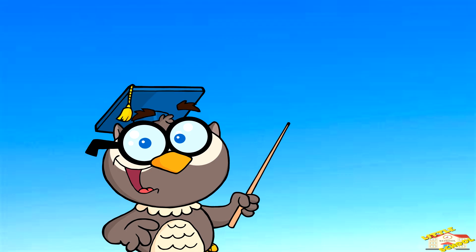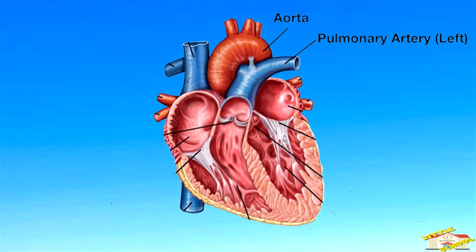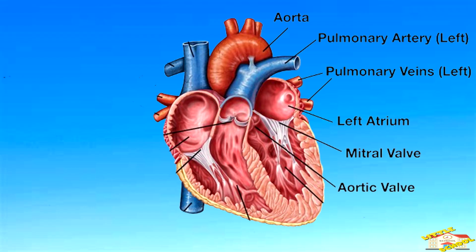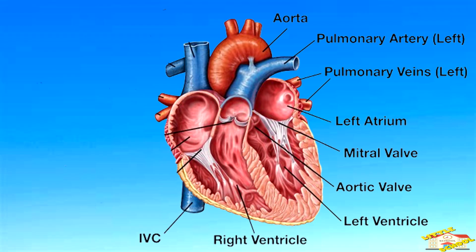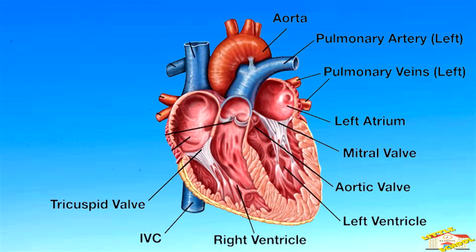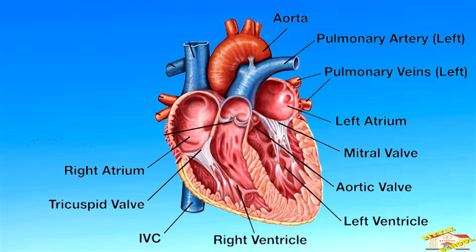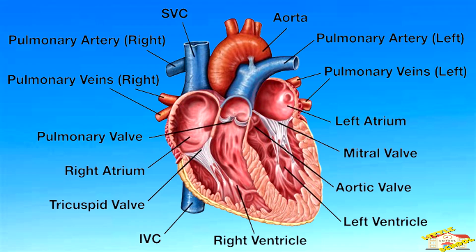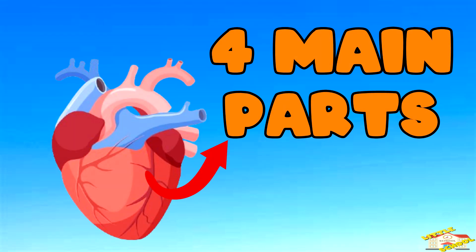Let's go over the parts of the heart: aorta, left pulmonary artery, left pulmonary veins, left atrium, mitral valve, aortic valve, left ventricle, right ventricle, inferior vena cava, tricuspid valve, right atrium, pulmonary valve, right pulmonary veins, right pulmonary artery, superior vena cava. The heart has four main parts, each playing a critical role in pumping blood throughout the body.